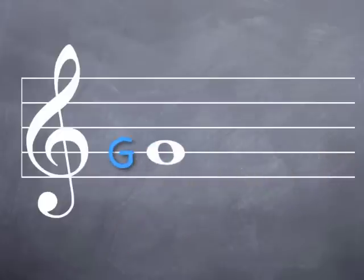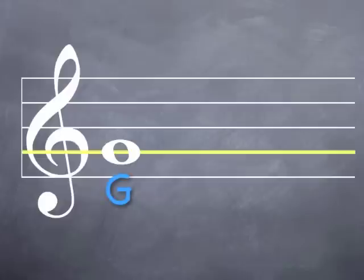Now let's keep going higher by memorizing the notes between our guide note treble G and our next guide note treble C. We left off the last lesson with treble G. It's on the line going right through the middle of the G clef.